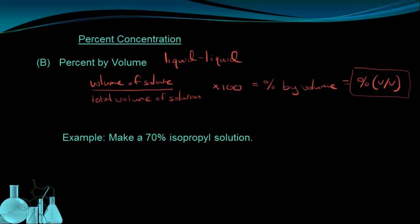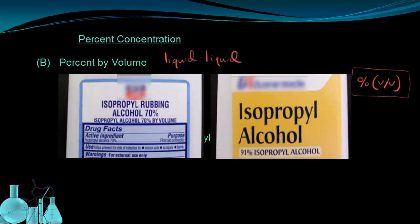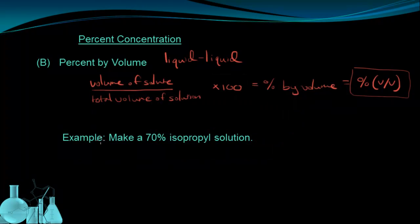Here's an example of two different concentration solutions of the same substance. So in the picture on the left, we have a 70% isopropyl alcohol solution, and the picture on the right, we have a 91% isopropyl alcohol solution. Now these percentages indicate a percent by volume. We're going to take a closer look at the 70% solution, and see as an example how to make a 70% by volume isopropyl alcohol solution.